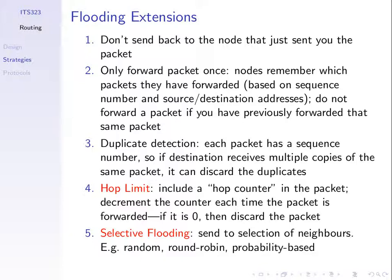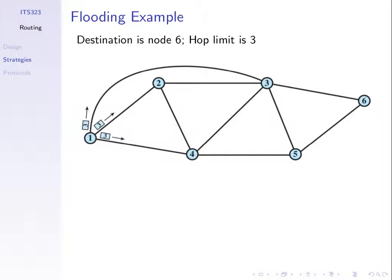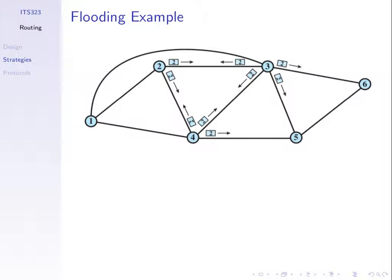Sequence numbers are commonly used. Another feature is a hop limit — when we send a packet, we want to limit how many times it's transmitted through the network, how many hops it will traverse. The hop limit is like a hop counter included inside the packet header. For example, the number three says that node one wants this packet to go no more than three hops. We transmit the packet to our neighbours, and when they receive it, they reduce the hop counter to two and send it on to their neighbours.